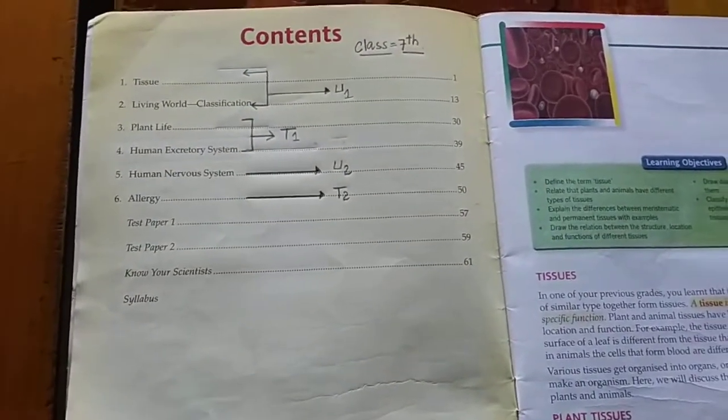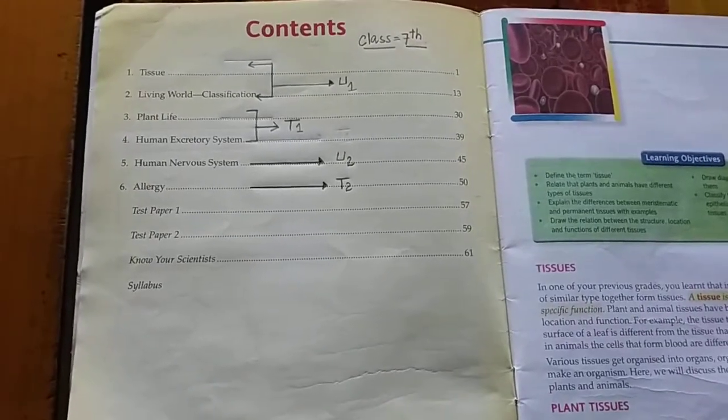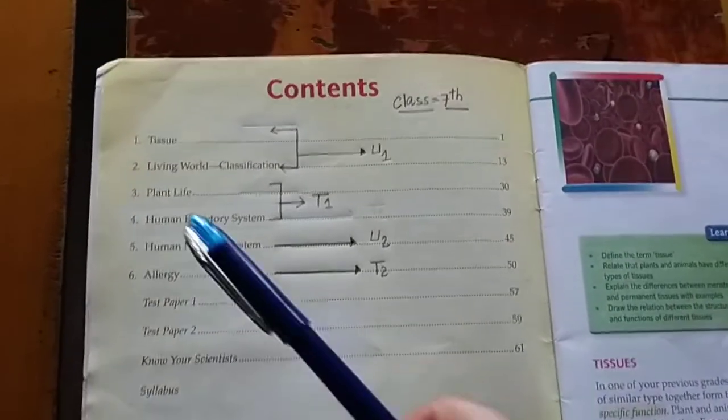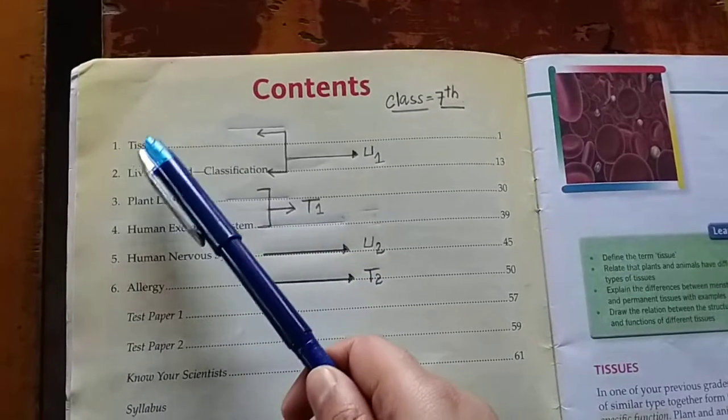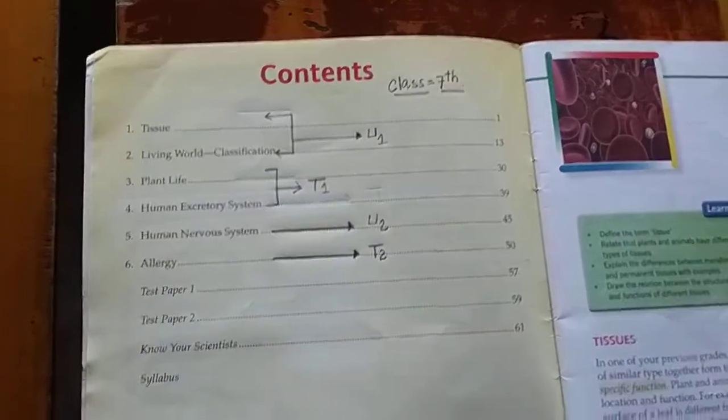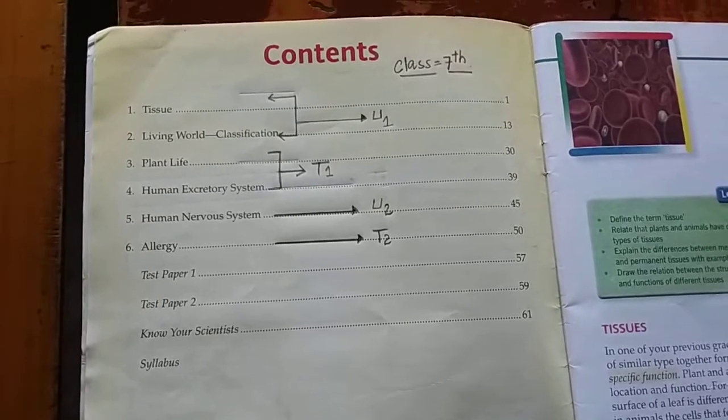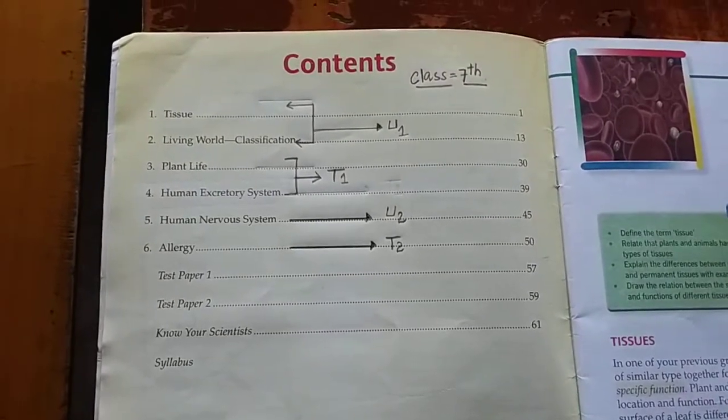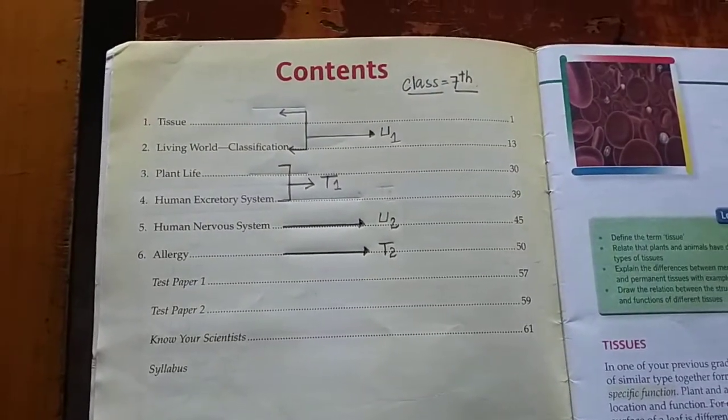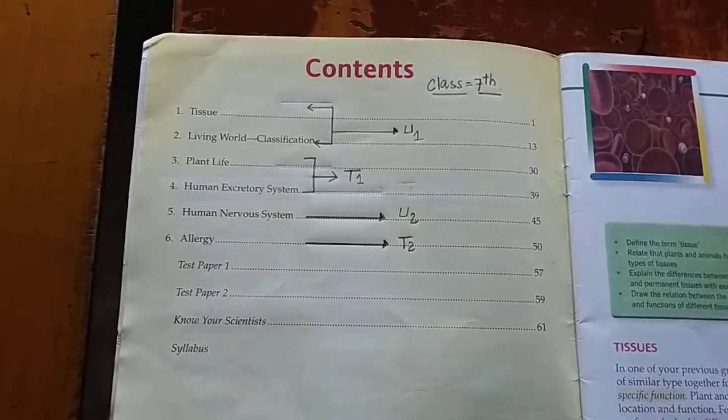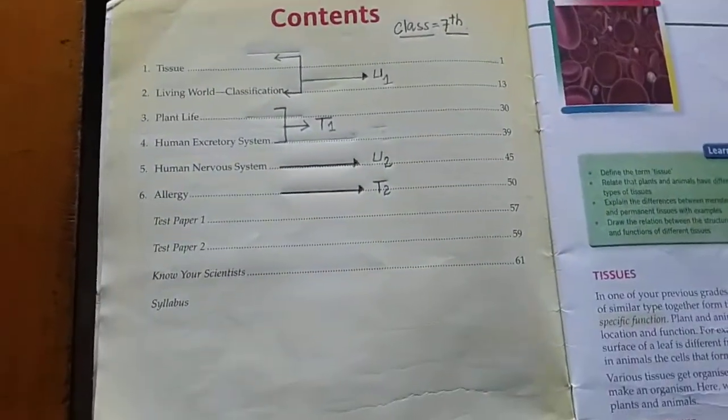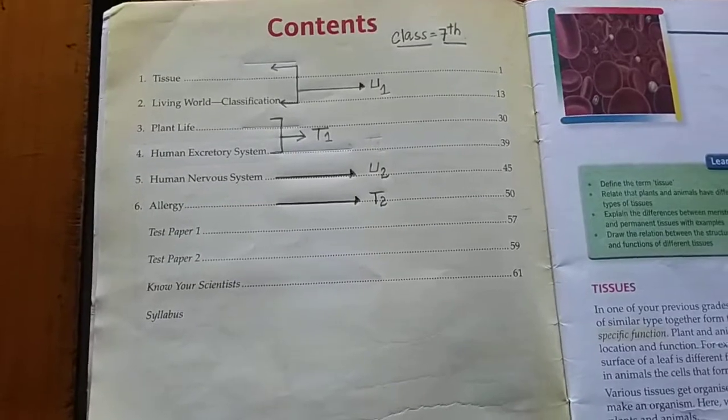As you can see, my dear students, the first chapter is tissue, given in the contents. In this very chapter, we will study about different tissues of living organisms, plants and animals particularly. As you know, life of every living organism starts from a cell. In case of unicellular organisms, there is present just a single cell which performs all the physiological roles.